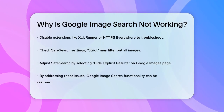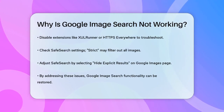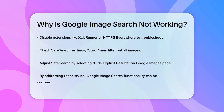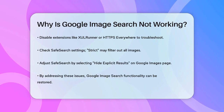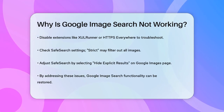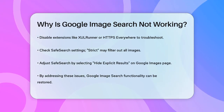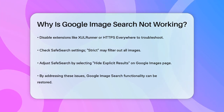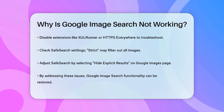Lastly, make sure that your Safe Search settings aren't too strict. If Safe Search is set to Strict, it might filter out all images, making it seem like the image search isn't working. You can adjust this setting by going to the Google Images page, clicking on the Safe Search button, and selecting Hide Explicit Results instead of Strict.